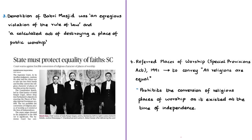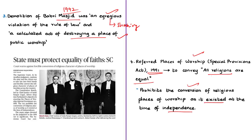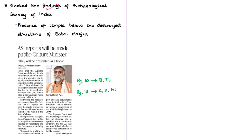The judges of the constitutional bench declared that the demolition of the Babri Masjid in 1992 was a shocking violation of the rule of law and a calculated act of destroying a place of public worship. In this context, the bench referred to the Places of Worship (Special Provisions) Act of 1991, which prohibits the conversion of religious places of worship as they existed at the time of independence, conveying that all religions are equal. The bench affirmed that the Constitution does not distinguish between faiths and that the government must enforce its commitment to secularism.